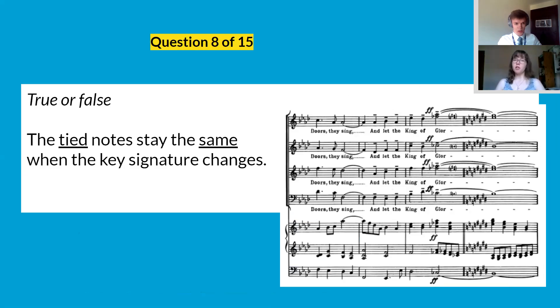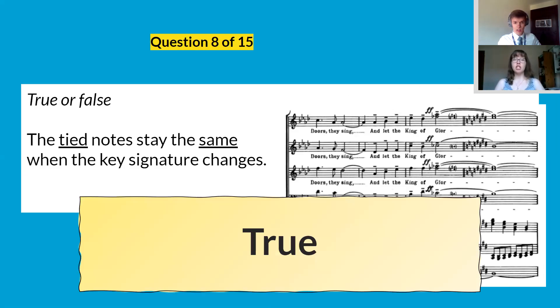Question eight, true or false, the tied notes stay the same when the key signature changes. It's true they do stay the same so that A flat becomes a G sharp and the F flat becomes an E natural. So if you look on the keyboard there's no black notes in between E and F so an F flat is actually an E natural. That's a tricky one but well done if you got it.